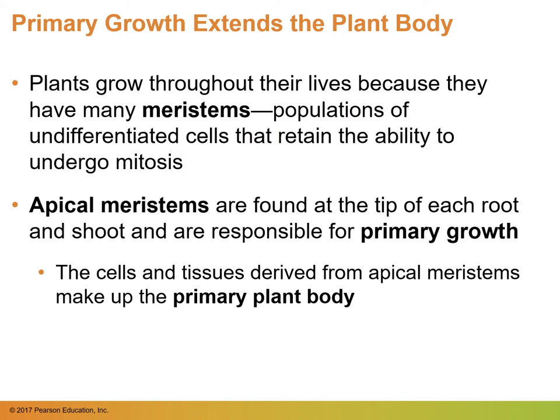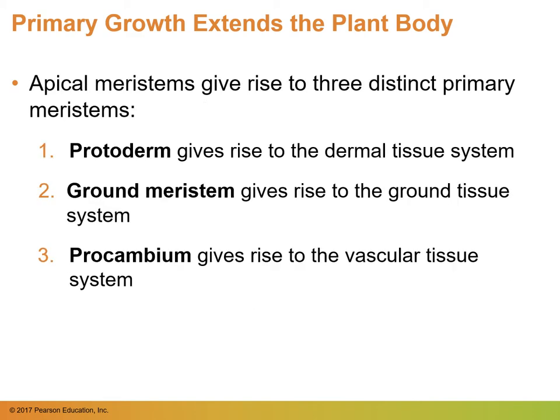Now we're going to zoom out to see the larger complex system including the meristems of the plant. Primary growth extends the plant body because there are many meristems — populations of undifferentiated cells that retain the ability to undergo mitosis, so they're constantly reproducing. Apical meristems are found at the tip of each root and shoot and are responsible for primary growth. There are three distinct primary meristems derived from the apical meristems: the protoderm, which gives rise to the dermal tissue system; the ground meristems, which give rise to the ground tissue system; and the procambium, which gives rise to the vascular tissue system, including the xylem and the phloem.